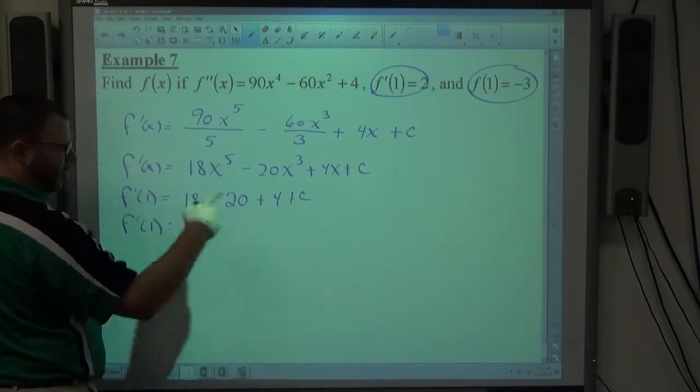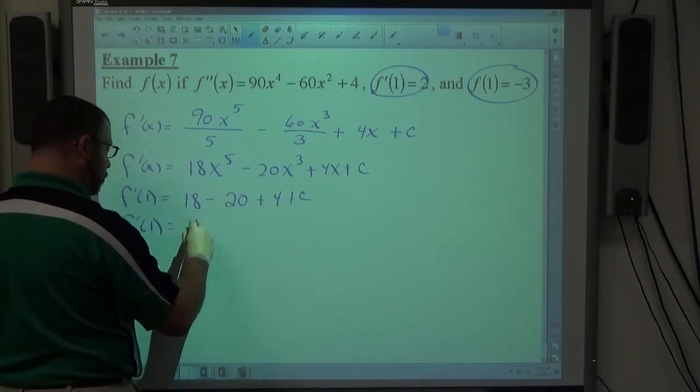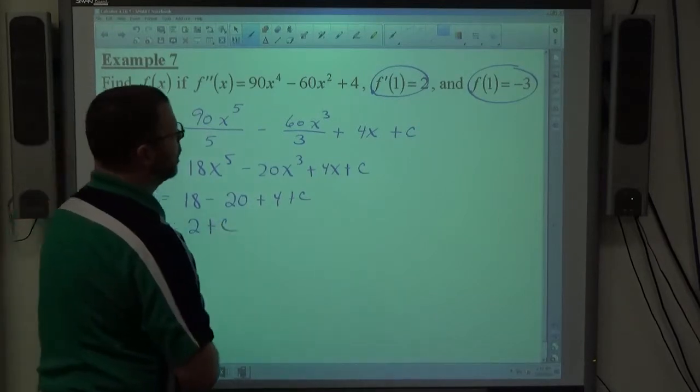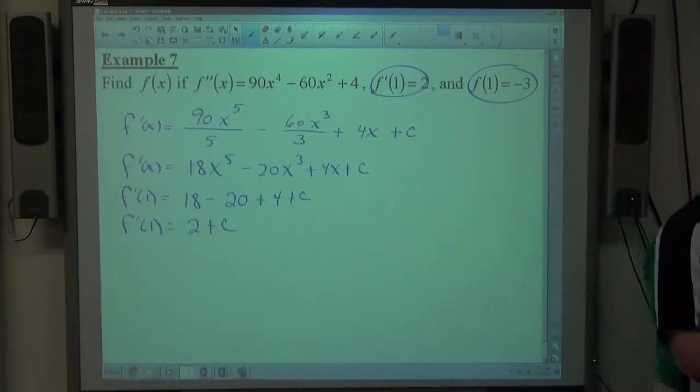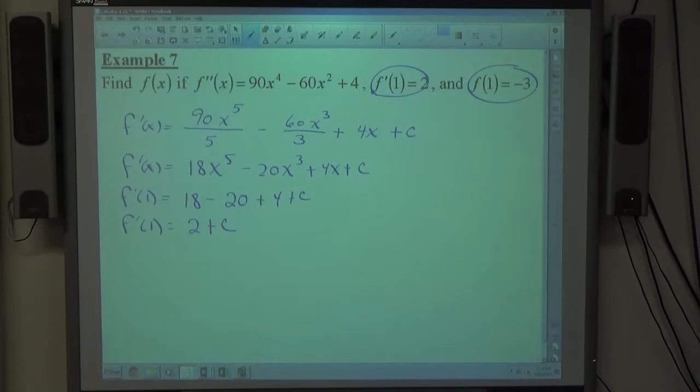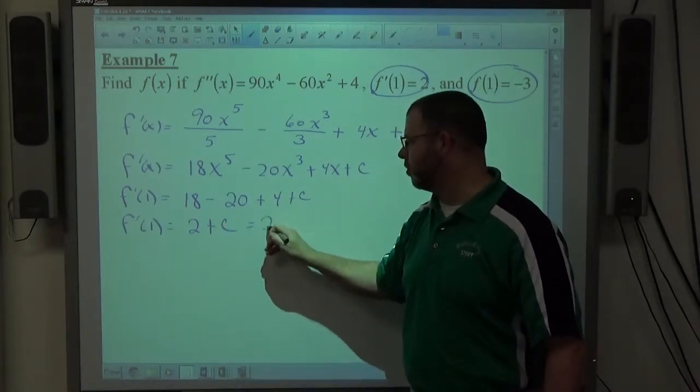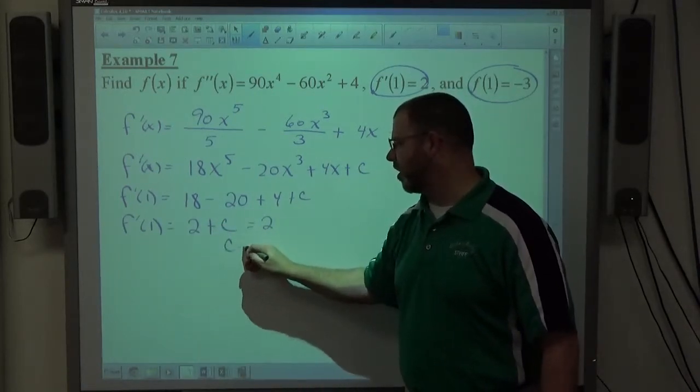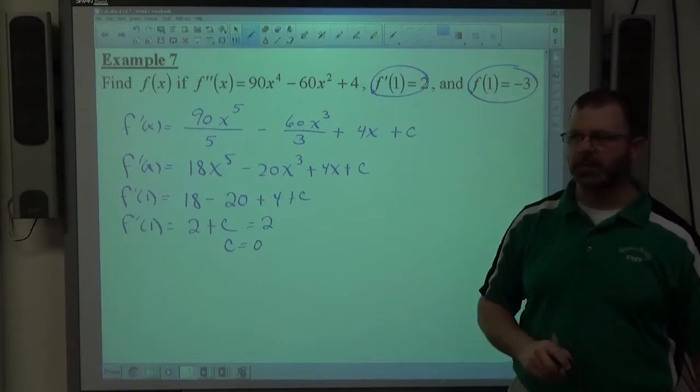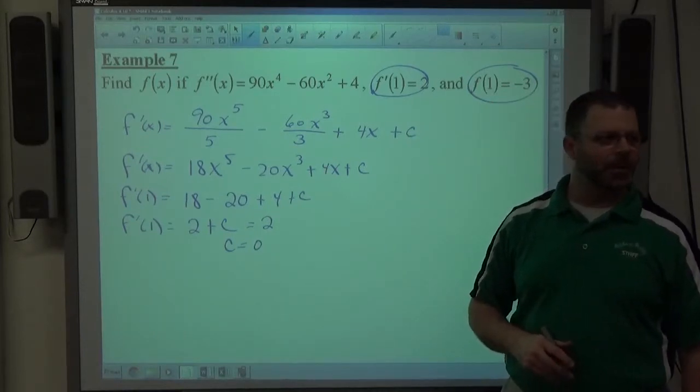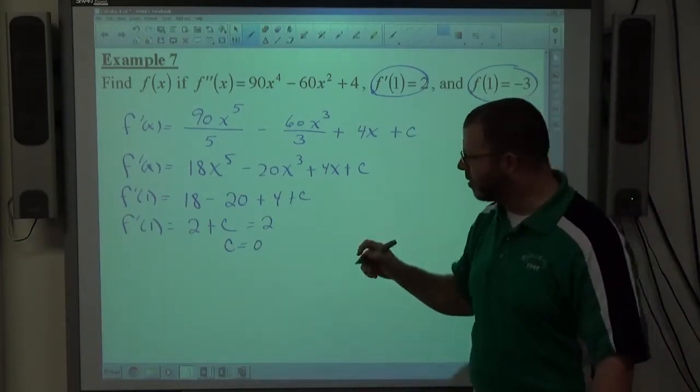And 18 plus 4 is 22, minus 20 is 2. These problems are kind of boring. We'll modify them before next year. All right. f prime of 1 is equal to 2 plus c, but f prime of 1 also equals 2. That simply means that 2 plus c must equal 2. Subtract the 2 from both sides. That gives me c is equal to 0 again. Much more fun to me when they're not equal to 0, but oh well. It doesn't matter.